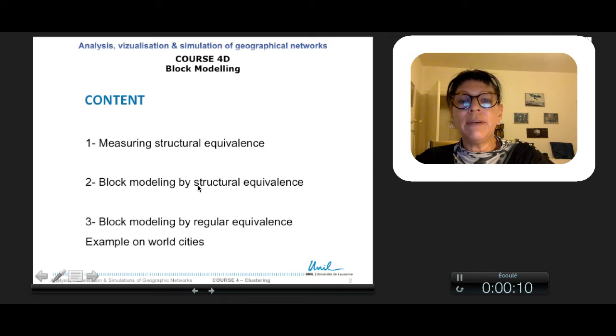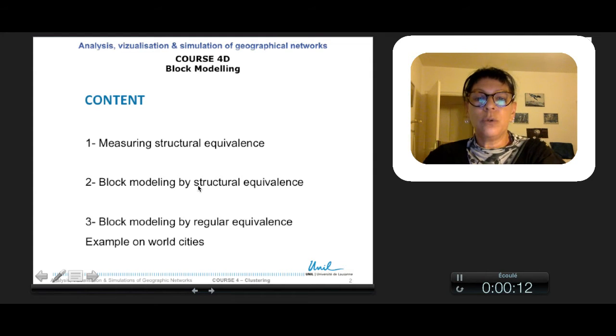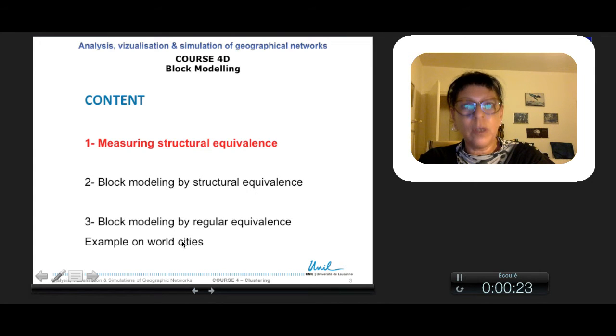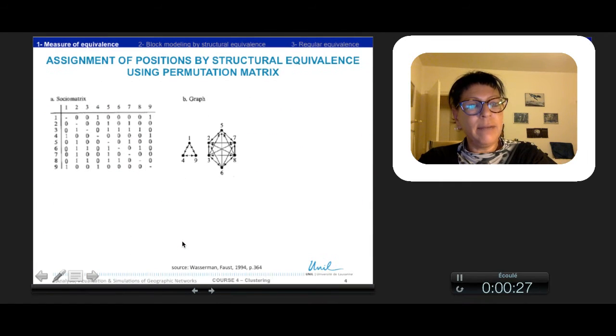We will see that one can use also the regular equivalence as well and we will see a famous example using regular equivalence on world cities. So starting with the measure of structural equivalence, the overall principle of the method is to start from a social matrix, as the example here, with the corresponding graph.